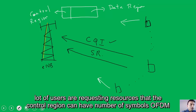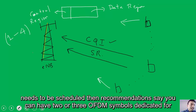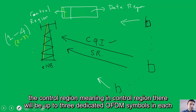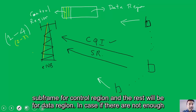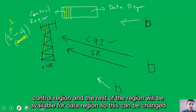If there is a lot of congestion in the network — meaning many users are requesting resources — the control region can have anywhere between one to four OFDM symbols. If more users are requesting resources or need to be scheduled, you can have two or three OFDM symbols dedicated for the control region, and the rest will be for the data region. If there are fewer users, you can use just one OFDM symbol for control and the rest for data.